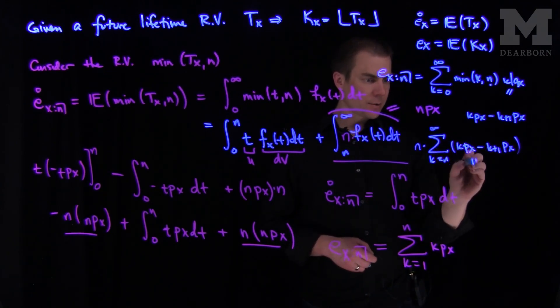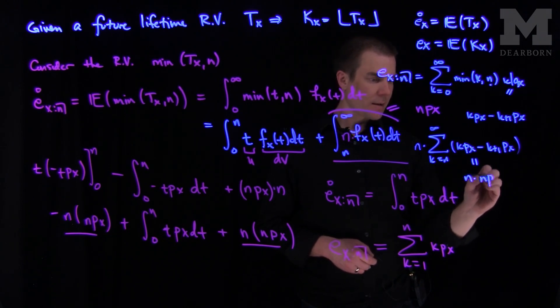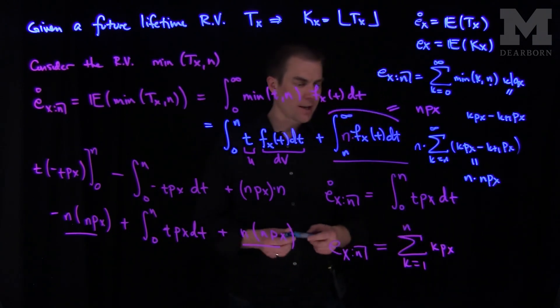And so what we'll see is we'll see that the n will get an n px over here. And then everything else will cancel out. So this will telescope to n times n px. And that will cancel with the last term in this expression.